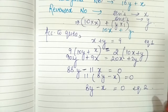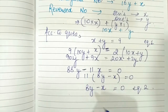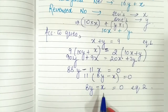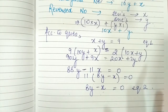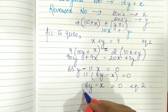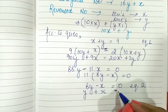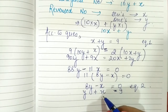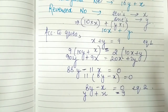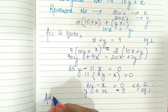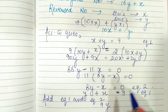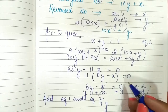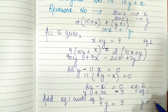Solving by elimination: the coefficient of x is 1 in both equations, so we need not multiply either equation. The signs of x are different in the two equations — when signs are different, we add. Adding equation 1 and equation 2: 8y plus y gives 9y, and negative x plus x cancels out, leaving 9y equals 9, so y equals 1.